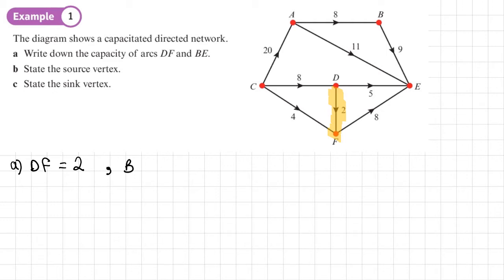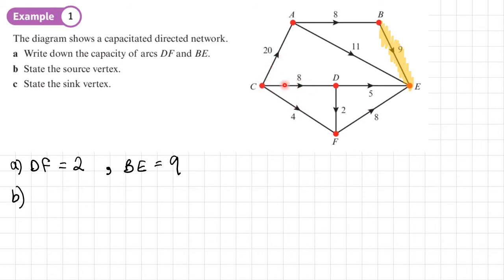Arc BE has a capacity of 9. Moving on to part B: state the source vertex. The source vertex is the vertex where all of the arcs are leaving, moving away from that vertex, and that is C. So C is the source vertex.